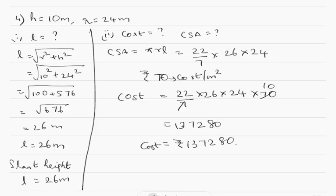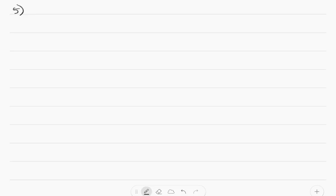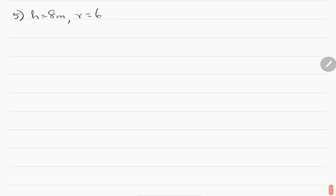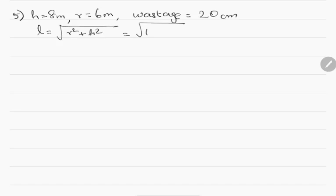Problem number 5: What length of tarpaulin 3 meters wide will be required to make a conical tent of height 8 meters and base radius 6 meters? Assume the extra length required for stretching, margins and wastage is approximately 20 centimeters. We know L equals square root of R squared plus H squared, which is square root of (6 squared plus 8 squared) equals square root of (36 plus 64) equals square root of 100, which is 10. So L equals 10 meters.